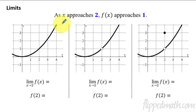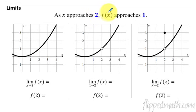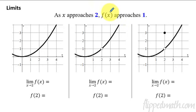When we think about limits, really what it is is: what is a function approaching? As we have an x value that approaches a number — in this case 2 — the y value is approaching a specific number. In the examples below, all three of these will have limits where as x approaches 2, f of x approaches 1. Remember, f of x is just like saying y approaches 1.